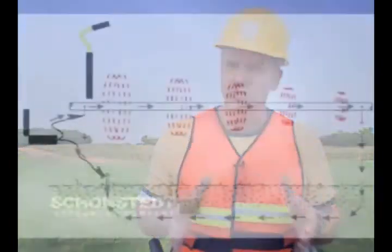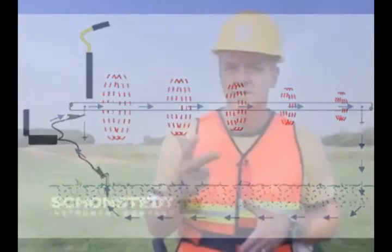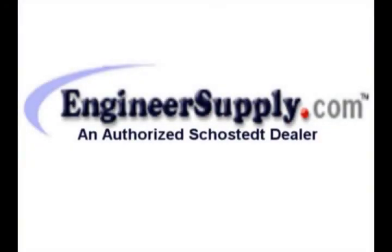The key to getting a strong signal on the conductor is applying the proper frequency. All signals applied to buried lines dissipate into the ground, which means that the signal gets weaker as it gets further away from the transmitter. The main factors that affect signal strength are cable diameter, soil conditions, and signal frequency. Of these, only signal frequency is under the control of the operator.